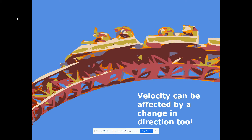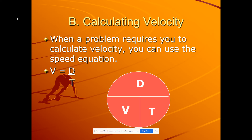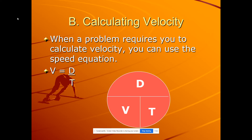Velocity can be affected by a change in direction or a change in speed. Just like speed, we can calculate velocity by taking displacement divided by time. So velocity equals d divided by t. We'll see displacement used more often in velocity problems because displacement provides directionality, whereas distance does not. We can use our pie chart, plug in what we know to find what we don't know.